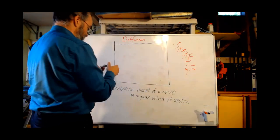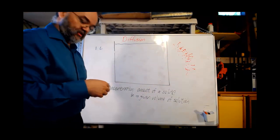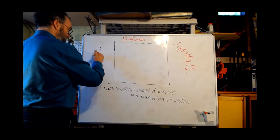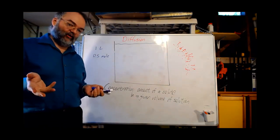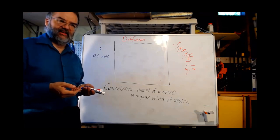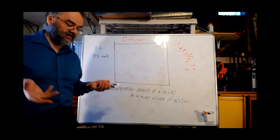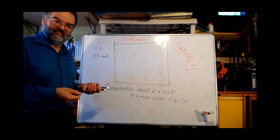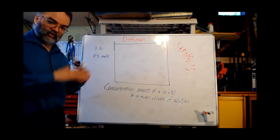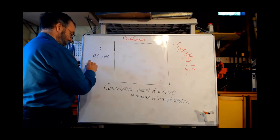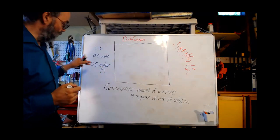Concentration is the amount of a solute in a given volume of solution. For example, if this is one liter and in it there is half a mole — a mole is just a quantity term, like dozen means 12, except a mole means about 6 times 10 to the 23rd — then half a mole of solute molecules in one liter of solution gives a concentration of 0.5 molar, abbreviated capital M, or one half mole per one liter.